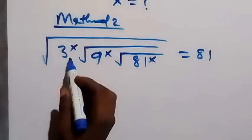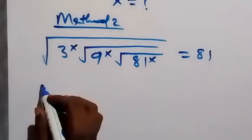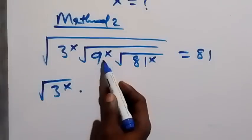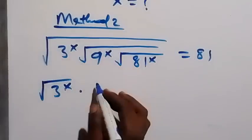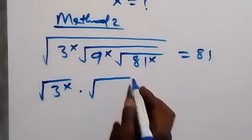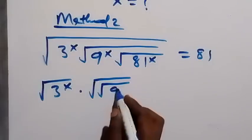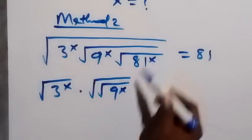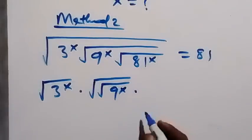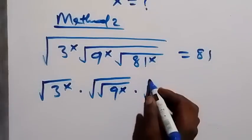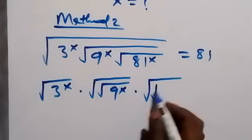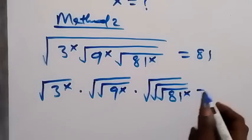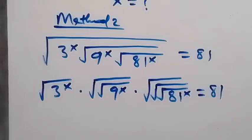Using this method, we separate these square roots. This becomes: square root of 3 raised to power x, times — since 9 raised to power x is inside two square roots — we have square root of square root of 9 raised to power x. Then multiply by 81 raised to power x, which contains three square roots: square root of square root of square root of 81 raised to power x, equals 81.